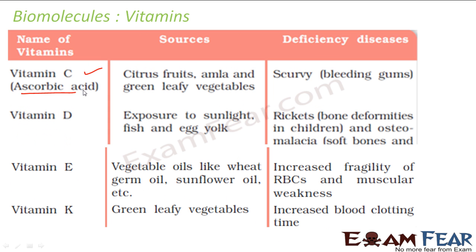Vitamin C, also called ascorbic acid, is found in citrus fruits, amla, and green leafy vegetables. If you don't take this, you get scurvy - bleeding gums disease.